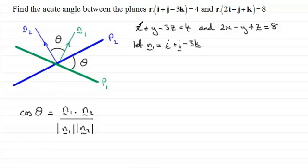Or we could just read the coefficients off of x, y and z. And the second vector, second normal vector, let's say we call it n2, then that's going to be equal to 2i minus j plus k.